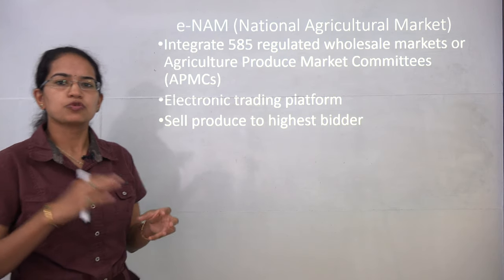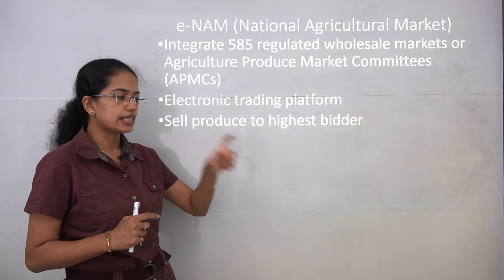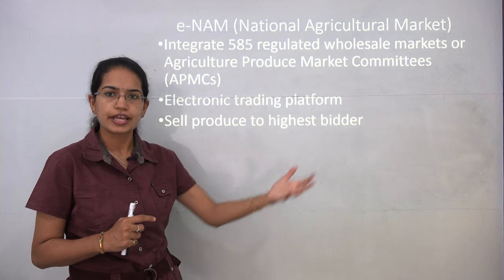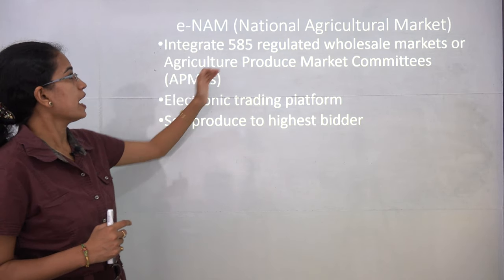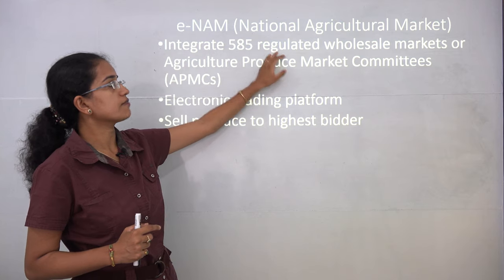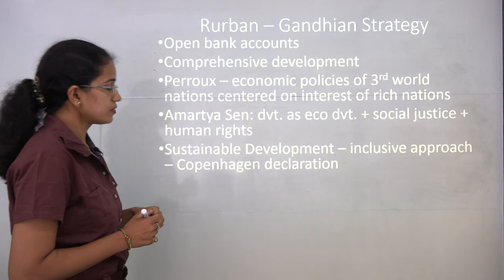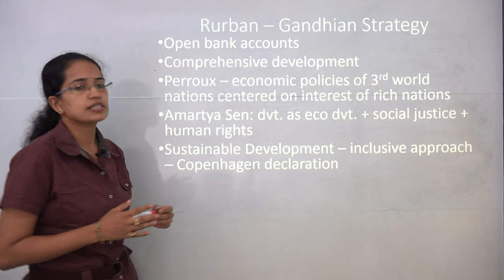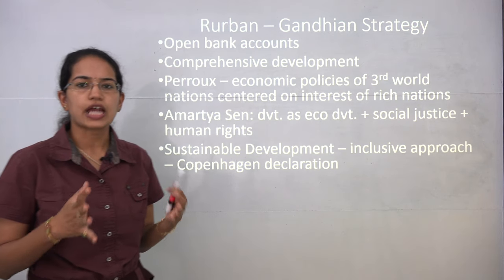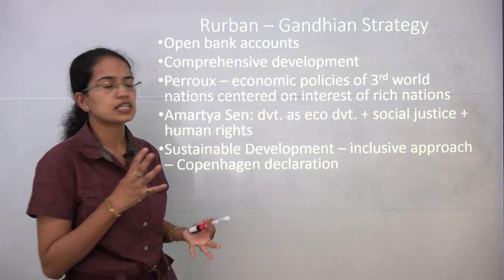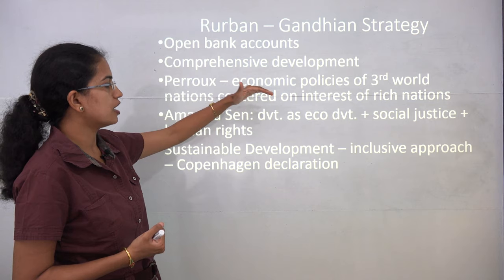e-NAM, the electronic version of the National Agricultural Market scheme, allows farmers to directly sell produce to the highest bidder. This integrates the 585 regulated wholesale markets. The R-Urban strategy is the Gandhian strategy to bring urban amenities to rural areas, including opening of bank accounts and an inclusive approach for sustainable development.